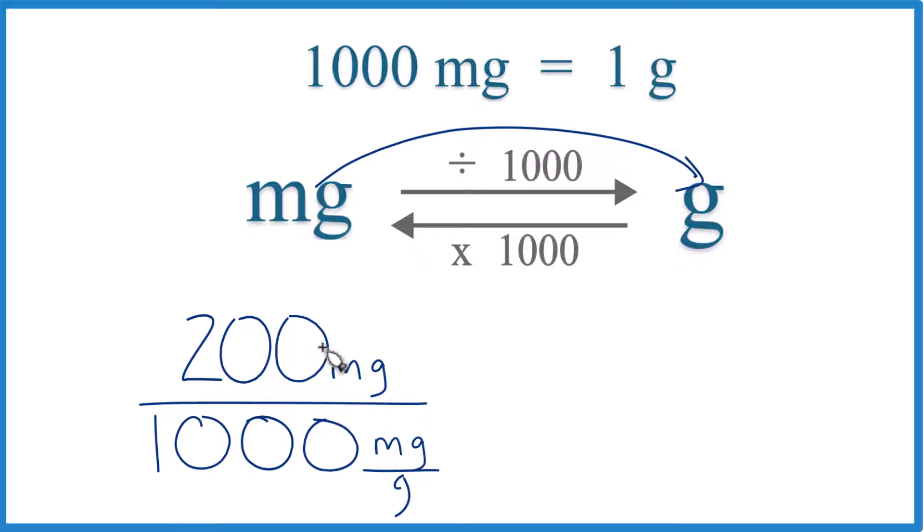But if you look at the units, we have 200 milligrams, and then on the bottom, 1,000 milligrams per gram. That's our conversion factor. This way, the units cancel out. We're left with grams. That's what we're looking for.